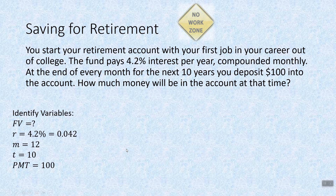We can identify our variables. How much money will be in the account? That's the future value — unknown. Our interest rate is 4.2%, which is 0.042. We are compounding monthly and depositing monthly — those will always match up in this class. Business classes will teach you about when that doesn't match. So m equals 12, 12 months in a year, and we're doing this for 10 years with a payment of $100.